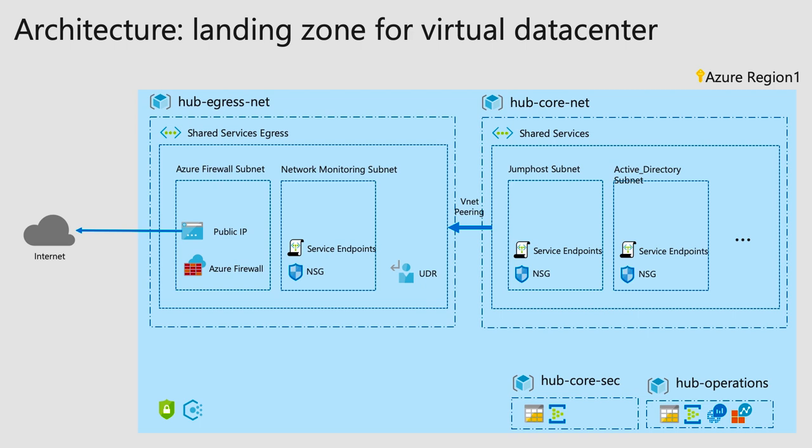Azure Policy is used to drive the behavior of the subscription — restricting behavior to make sure you're compliant with certain frameworks. In the resource group hub core net, you have one shared services network with a set of virtual networks. Out of the box, we come with the right network security groups, security endpoints, and service endpoints. The egress blueprint comes with Azure Firewall, a public IP address, and the right UDR object that allows you to redirect all traffic.